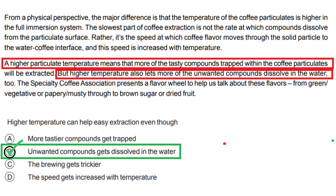Option D: The speed gets increased with temperature. This option is also incorrect because, while the paragraph does mention that the speed at which coffee flavor moves through the solid particle to the water-coffee interface is increased with temperature, this does not directly address the overall ease or difficulty of extraction, making option D an inaccurate interpretation. In summary, option B is correct because it aligns with the statement that higher temperature allows more unwanted compounds to dissolve in the water. The other options are incorrect because they do not accurately reflect the information provided in the paragraph.